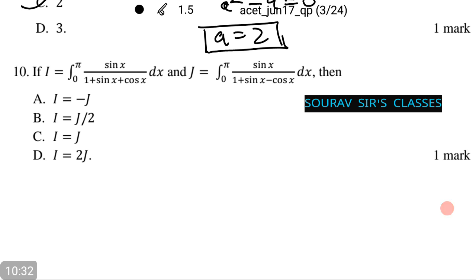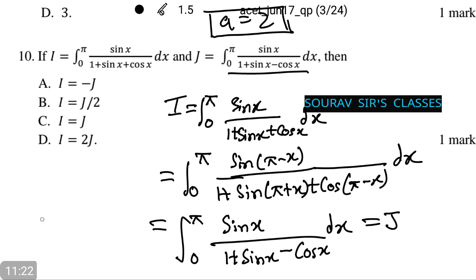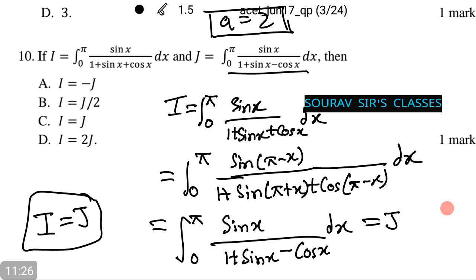The last question: i equals the integral from 0 to π of sin x divided by (1 plus sin x plus cos x) dx equals j, the integral from 0 to π of sin x divided by (1 plus sin x minus cos x) dx. Starting with simplifying i, upon simplification i reduces to the integral of sin x divided by (1 plus sin x minus cos x) dx, which is exactly j. Thus i equals j, and the answer is option c.